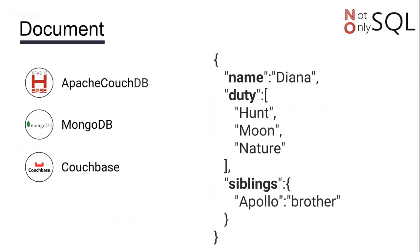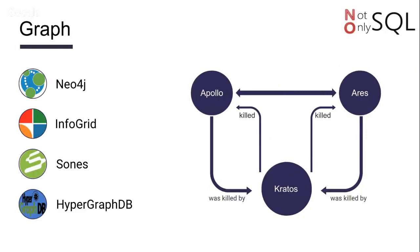The third NoSQL database type is the document. The structure looks like an XML or JSON file. We have several implementations — MongoDB is by far the most popular NoSQL database in this family, the most widely used around the world. So if you've heard about MongoDB, yes, that's a NoSQL database of the document type. We also have the graph, which keeps the relationship between vertices. As you can see here, we have Apollo, Aries and Kratos, and we keep the relationship between them.